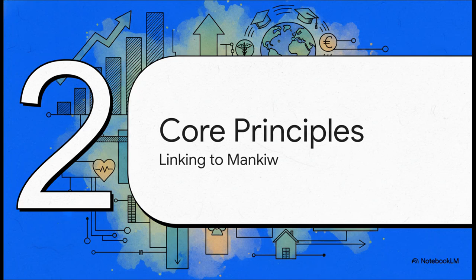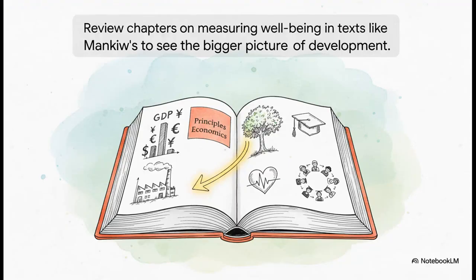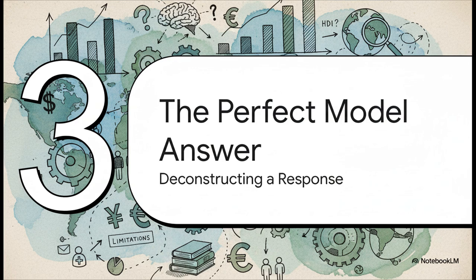Here's a pro tip for getting those top marks: you can't just spit out a list of facts you memorized. The best answers connect what you're talking about back to the big ideas, back to your textbooks — it shows the examiner you actually understand how these concepts fit together. So if you've got a textbook like Mankiw's Principles of Economics, flip to the chapters on measuring well-being, where he gets into the debate about whether GDP is really the best measure of a good life. Mentioning that context is what separates a good answer from a great one. All right, theory time is over — let's see what this looks like in practice.